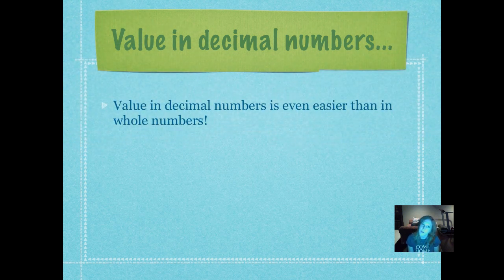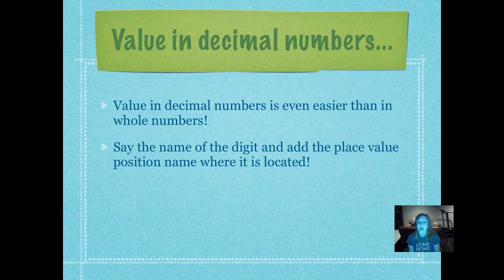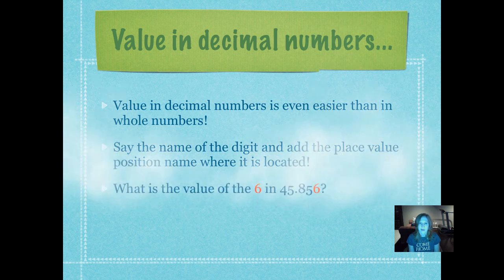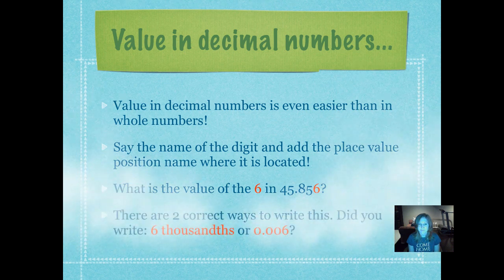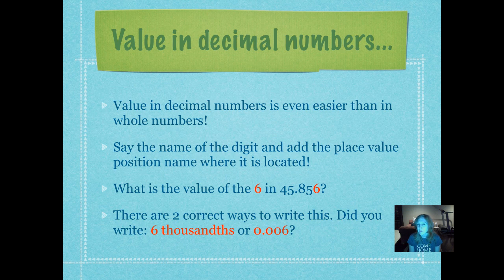When we are trying to express value in decimal numbers, it's even easier than in whole numbers. You just say the name of the digit and then add the place value position name where it's located. What is the value of the six in 45 and 856 thousandths? Pause it and write it down. Did you write 'six thousandths'? You could also have written 0.006. The six is in the thousandths place, so it expresses the value six thousandths. Remember when we did value in whole numbers and we replaced digits before the decimal with zeros — it's the same way after the decimal.